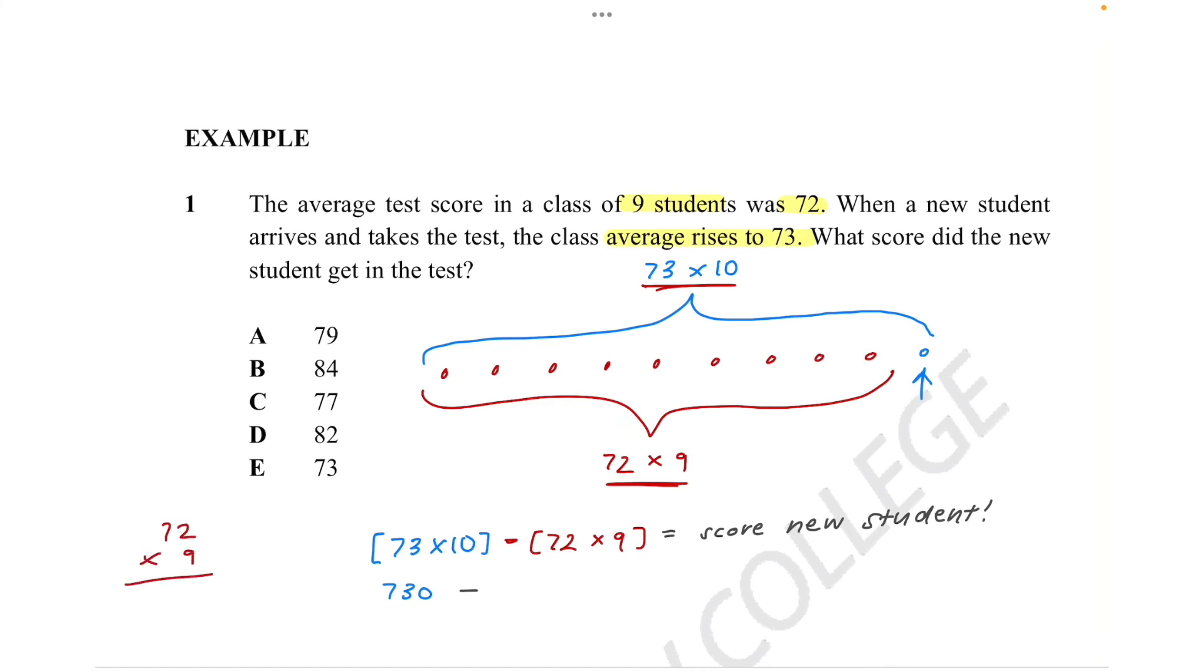So 9 times 2 is 18. 7 times 9 is 63. But then we have to add another 1, because it got carried over. So that's 648. And now we just need to minus these two numbers.